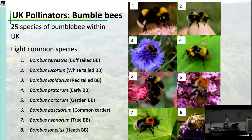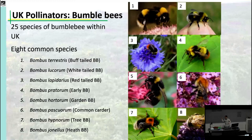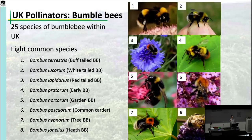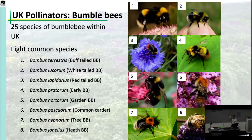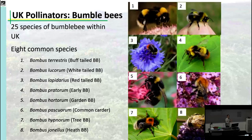Bumblebees, on the other hand, are extremely efficient pollinators. Honeybees go to a flower, come back to the hive, go out again, come back — that's what makes them inefficient. Bumblebees go out, go to a flower, then the next flower, then the next, and then head back to the hive. Because there's so much more movement between flowers, bumblebees are superefficient when it comes to pollinating.